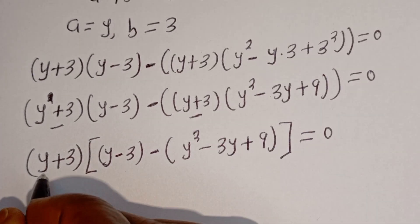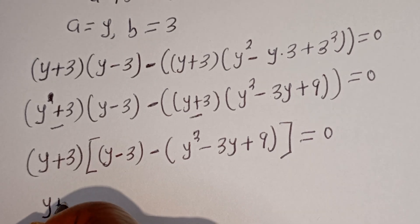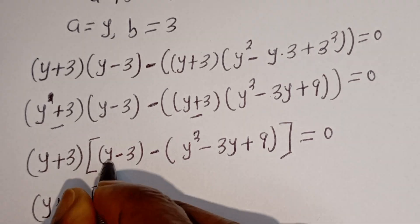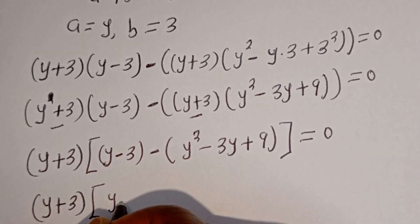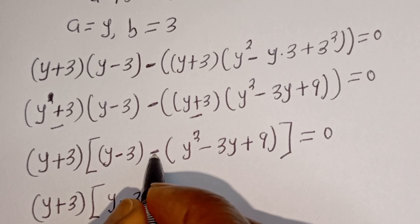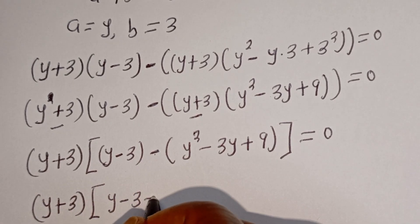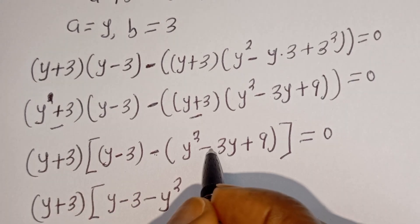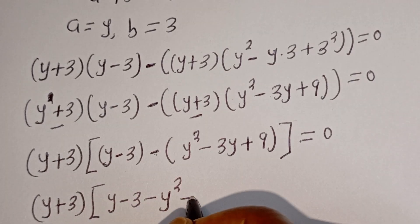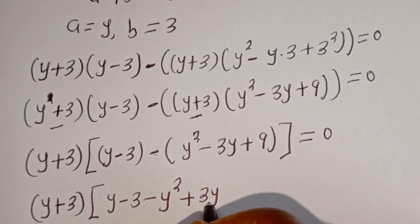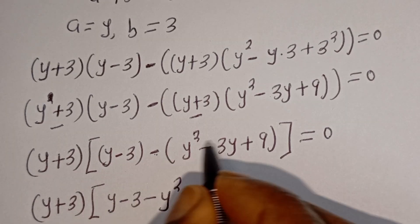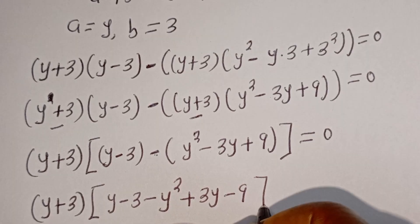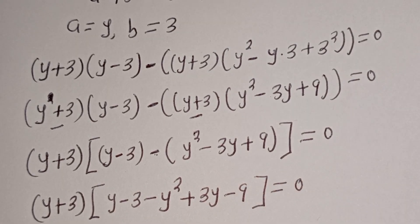Then we have y plus 3, bracket, y minus 3, then minus multiplied by y squared becomes minus y squared. Minus multiplied by minus 3y becomes plus 3y. Minus multiplied by plus 9 becomes minus 9, equal to 0.